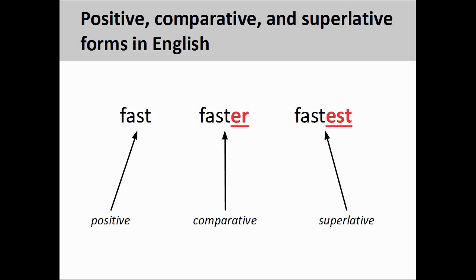When adjectives are used to compare between two persons or things, the comparative form of the adjective is used. In English, the comparative is usually formed by adding the suffix '-er' to the positive form of the adjective. You can see the comparative form of 'fast,' or 'faster,' on the screen. When a comparison is being made between three or more persons or things, the superlative form is used. In English, the superlative is usually formed by adding the suffix '-est' to the positive form. You can see the superlative form of 'fast,' or 'fastest,' on the screen.